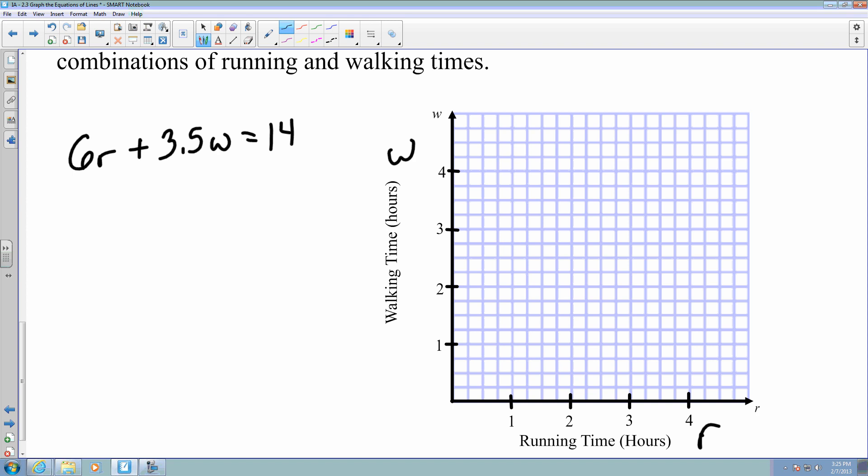So how I can graph this is I'm going to determine what it would be on the y-axis. I'm going to set my r equal to 0, assuming that I walked the entire race. So if I set r equal to 0 and then solve for w, I would just have 3.5w equals 14, and 14 divided by 3.5 equals 4. So I'm going to plot this 4 here.